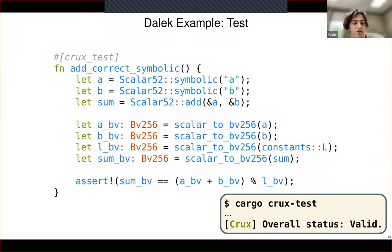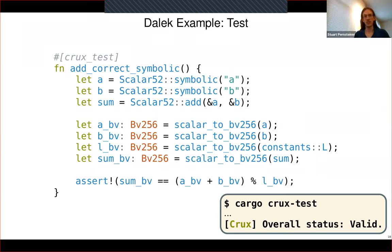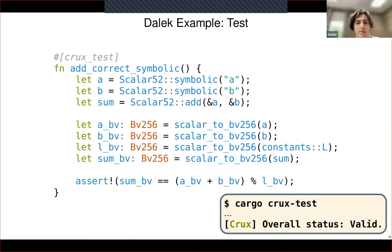Audience question: Can you handle mutable references in CruxMirror, or is it something you haven't looked into because your target is more cryptographic code? Answer: We can handle mutable references. Our handling for safe references is pretty robust. If you start trying to do funny things with unsafe raw pointers, you can run into some cases the tool doesn't handle, but basically all safe constructs work in CruxMirror at this point — things like index_mut and accessing collections mutably all work fine.